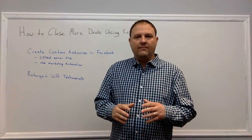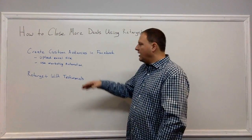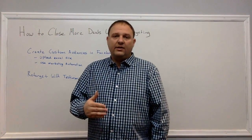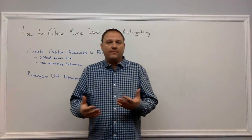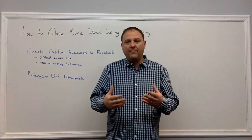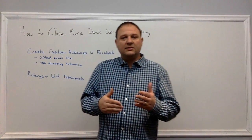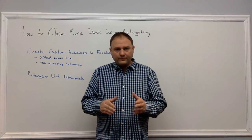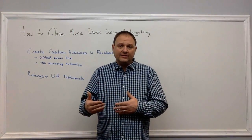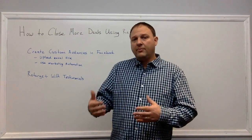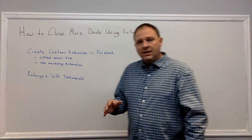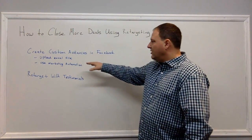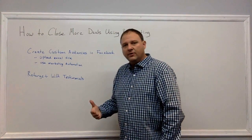What I'd suggest is using marketing automation and pushing contacts over through API. If you need help setting this up, we do this quite often and I'd be happy to help. What you can do is segment your contacts in your marketing automation platform by tagging them once you create the estimate or proposal. Once you apply that tag, you can configure a trigger that automatically pushes that contact into your Facebook custom audience.